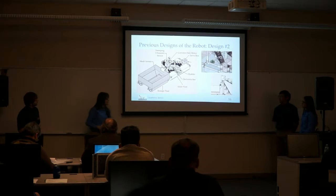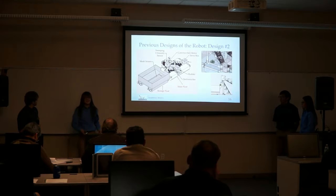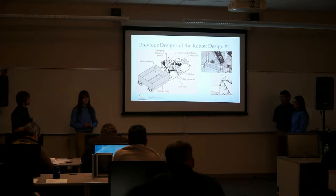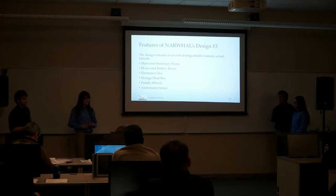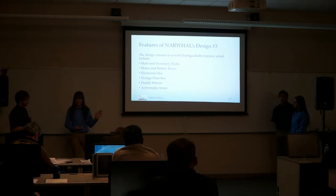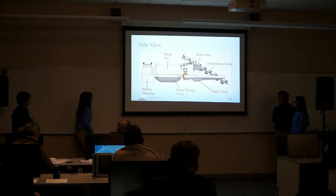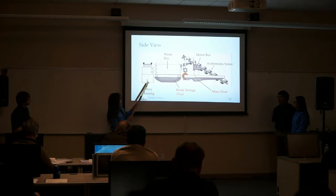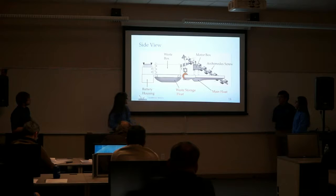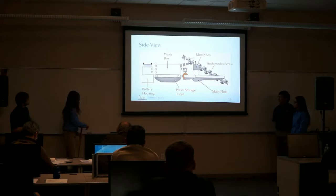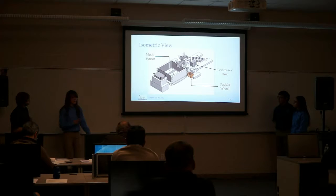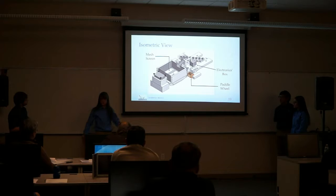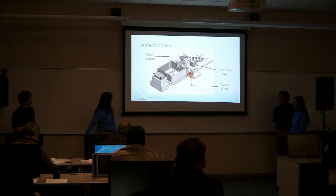We kept discussing and came up with the third design. We still have the main float, storage float, electronic boxes, and motor boxes, but this design has a pair of paddle wheels and an Archimedes screw. In the side view you can see the paddle wheel, battery box, waste storage box, secondary float, and main float, as well as the Archimedes screw. In the isometric view you can see a mesh screen at the bottom of the box — once algae goes in, water drains back into the lake. That concludes my section.